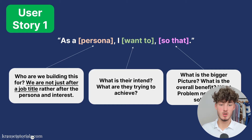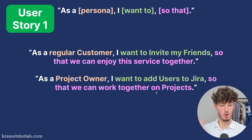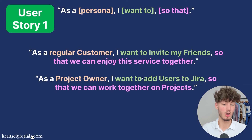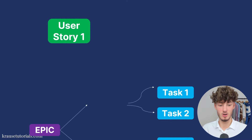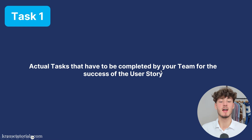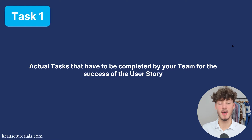The third variable is 'so that' — what is the bigger picture, the overall benefit, and what problem should be solved. These statements should be implementation-free, so do not describe any part of the UI, and do not mention any technology. The only thing you want to cover is the actual user goal. Some examples: 'As a regular customer, I want to invite my friends so that we can enjoy the service together.' Or: 'As a project owner, I want to add users to Jira so that we can work together on projects.'